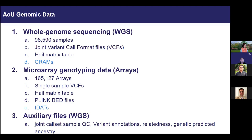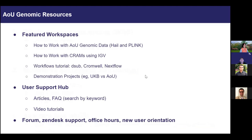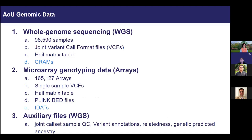For the most recent release, we also provide single-sample CRAM files for the whole genome sequencing data and single-sample IDAT files for the arrays. Besides all the common formats, we also provide some auxiliary files for the whole genome sequencing data, like the variant annotation table, the genetic predicted ancestry, and the relatedness. The variant annotation table and the Hail matrix table will be the files we are using in this demo. Feel free to let us know if you think you need other auxiliary files that are important for your research.